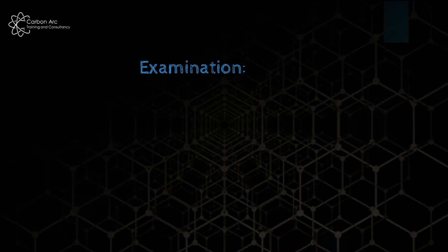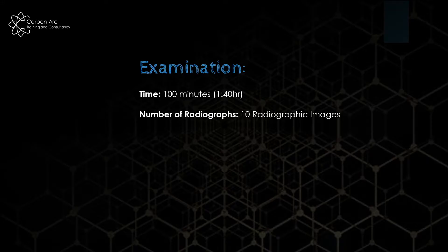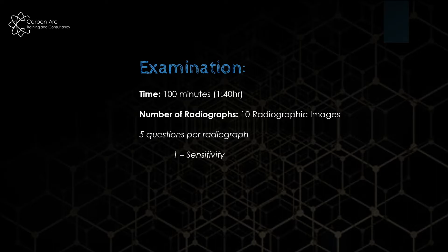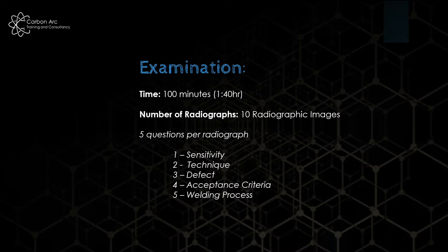So what is the exam going to be like? It's a supplementary part added at the end of your normal senior welding inspection paper. You'll be given an hour and 40 minutes, in which you need to review 10 radiographs. These are broken down into five sections of five questions each, following a general pattern: a sensitivity question, a technique question, a defect question, an acceptance criteria question, and a welding process type question.